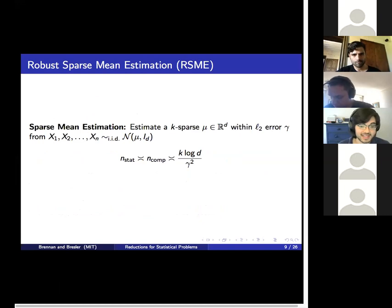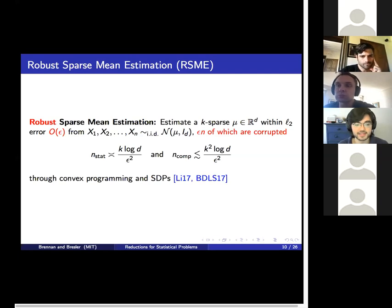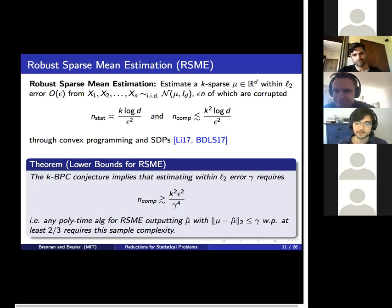Now I'll introduce the example we'll look at for the rest of the talk. In ordinary sparse mean estimation, the task is to estimate a k-sparse vector mu in d dimensions within L2 error gamma given access to i.i.d. Gaussian perturbations of mu. This problem is gapless—efficient algorithms achieve optimal sample complexity of k log d over gamma squared. However, if an adversary corrupts an epsilon fraction of samples, then information theoretically the best estimation error achievable is now O of epsilon. More importantly, a gap begins to emerge—a gap between n_stat and n_comp of this factor of k, very similar to the sparse PCA setup. This upper bound can be achieved through convex programming.